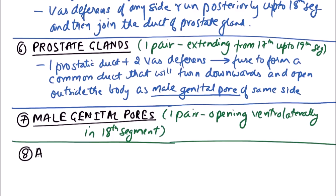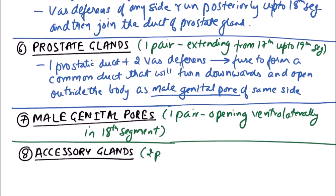Next are accessory glands. These are two pairs, one pair each in the 17th and 19th segment.